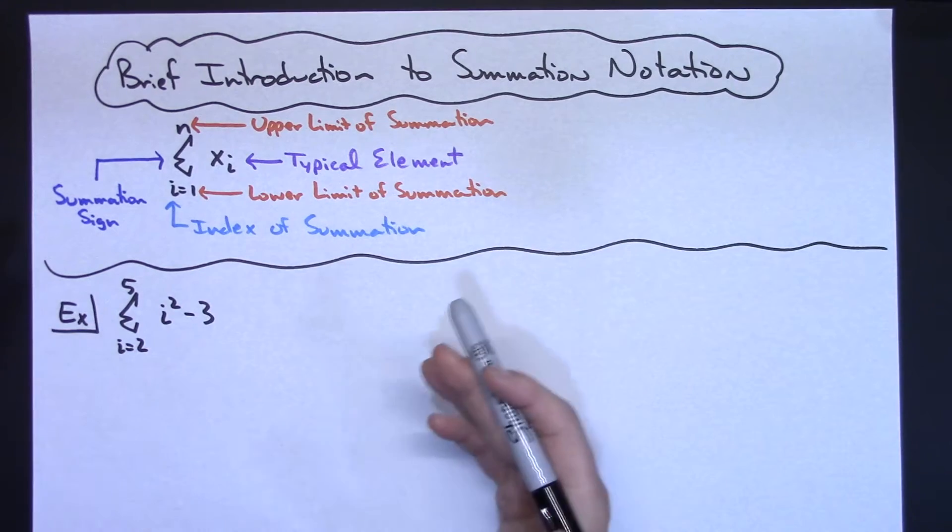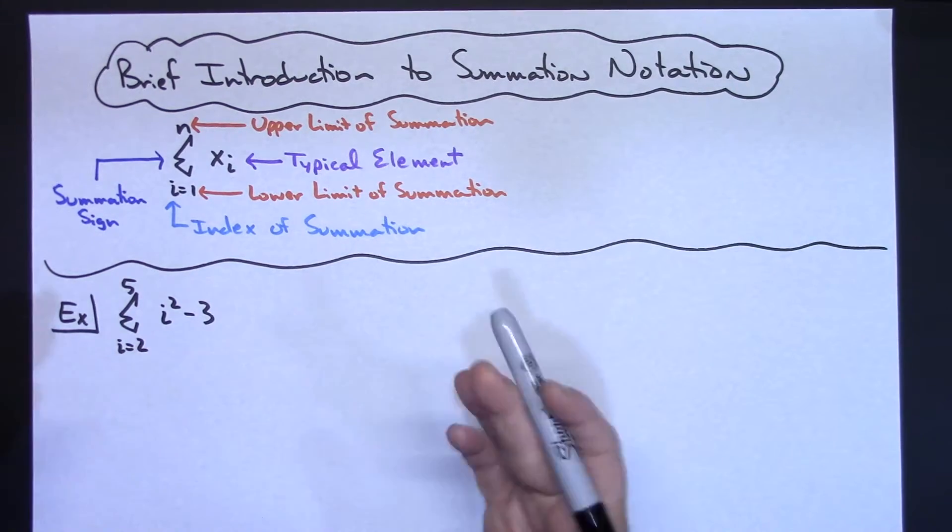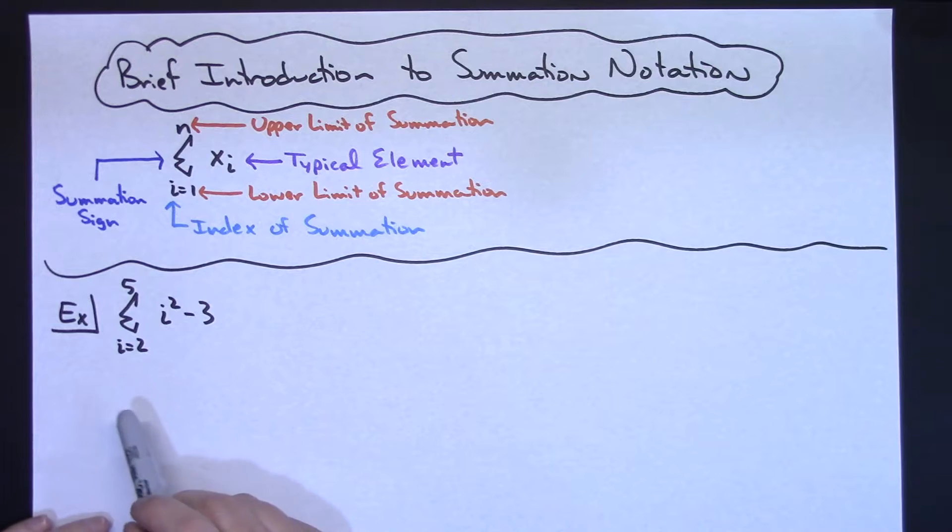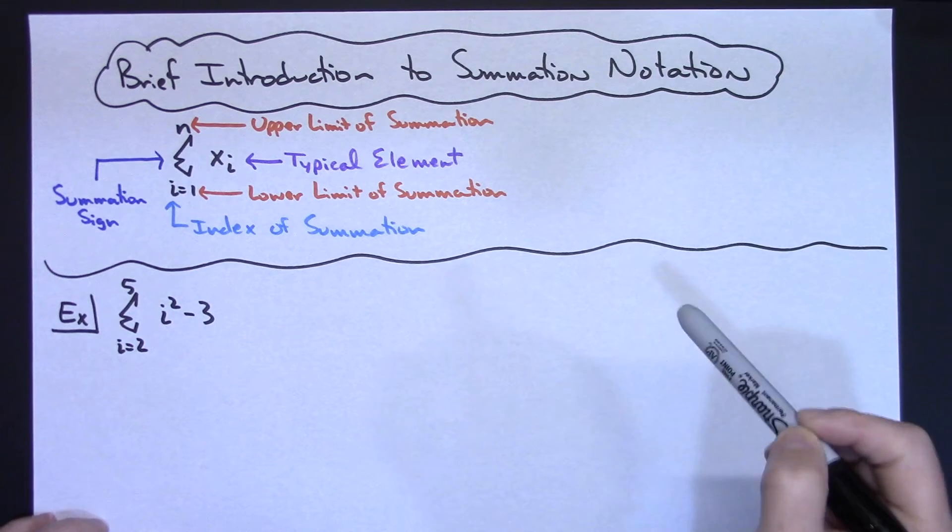For example, if you just wanted to do a really straightforward summation, this would be a very early thing in an introduction to this. Let's say that I'm running i from 2 to 5. So I'm just going to start at 2, i is going to start at 2, and then go to 3, and then 4, and then 5.